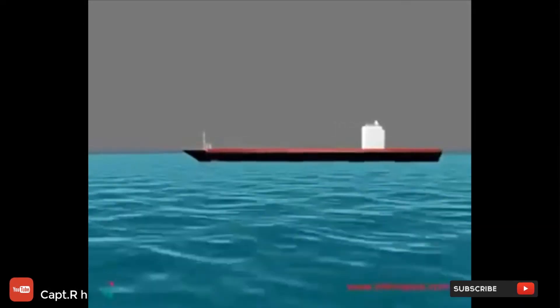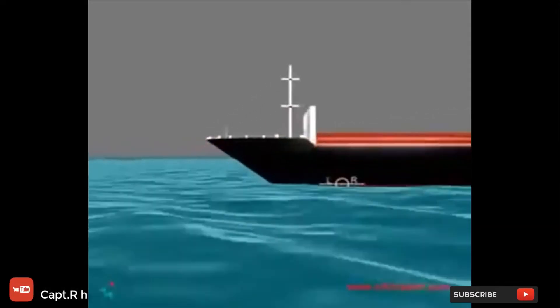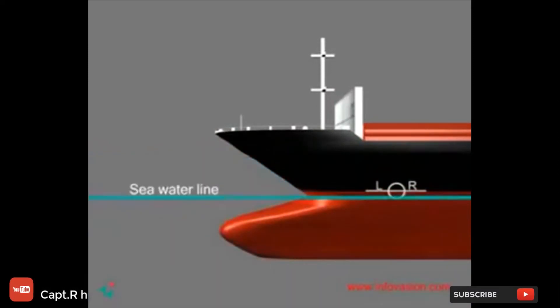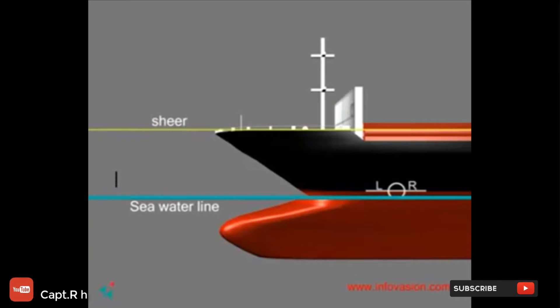The purpose of a load line or Plimsoll line is to ensure that the ship is not overloaded and has sufficient freeboard. It indicates the maximum safe draft and the minimum freeboard for the ship in various operating conditions.